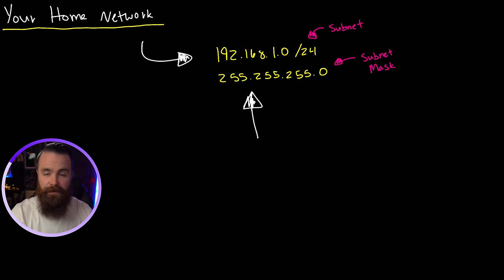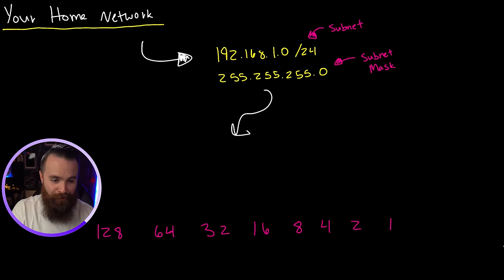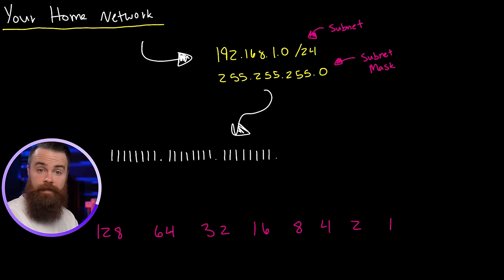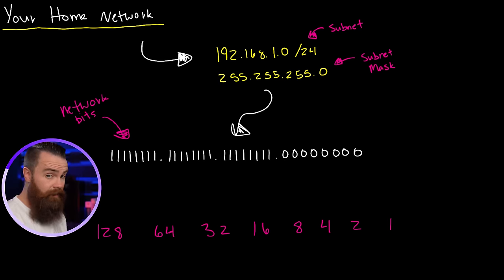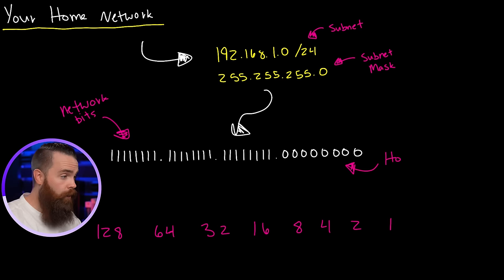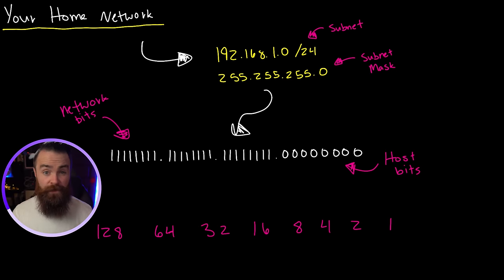Now back to subnetting. You may recall from episode five that the subnet mask tells us everything we need to know about the network — it whispers things to us. But to unlock its secrets, we'll have to convert it to binary using our good old buddy Nosferatu and our magic chart. This is what our subnet mask looks like in binary. The ones are our network bits, telling us about the network, and the zeros are our host bits, telling us how many hosts can be on this network.